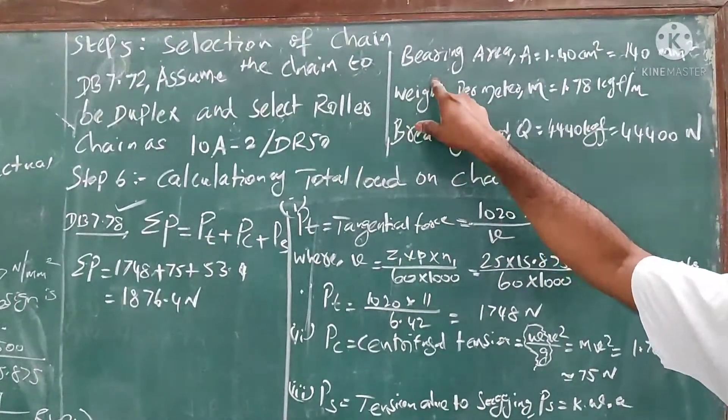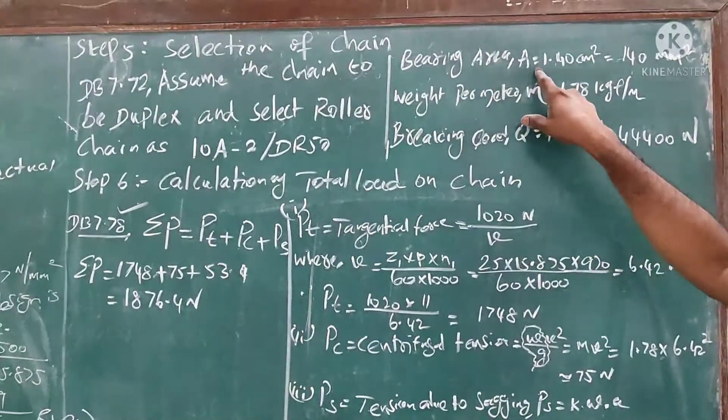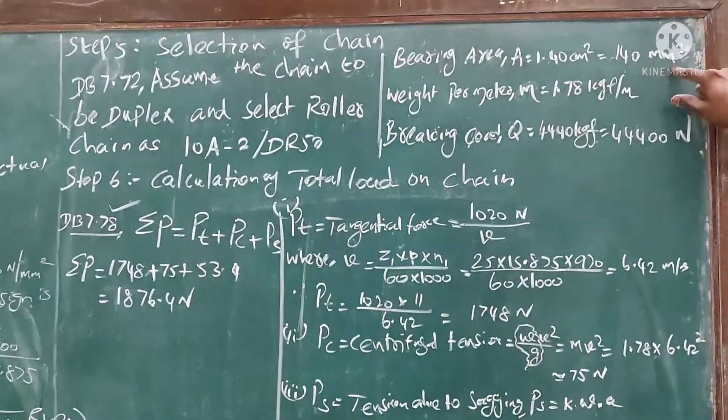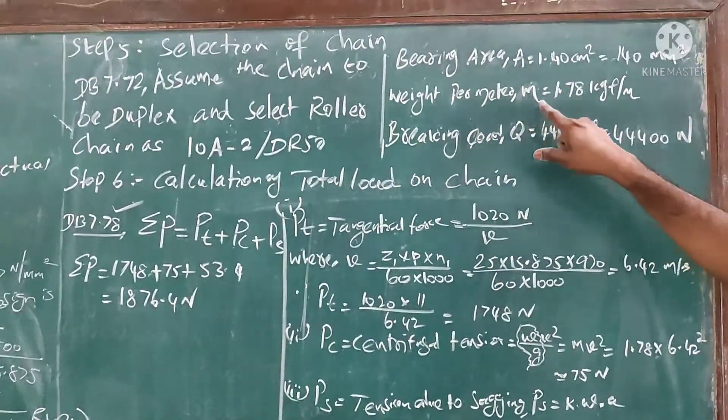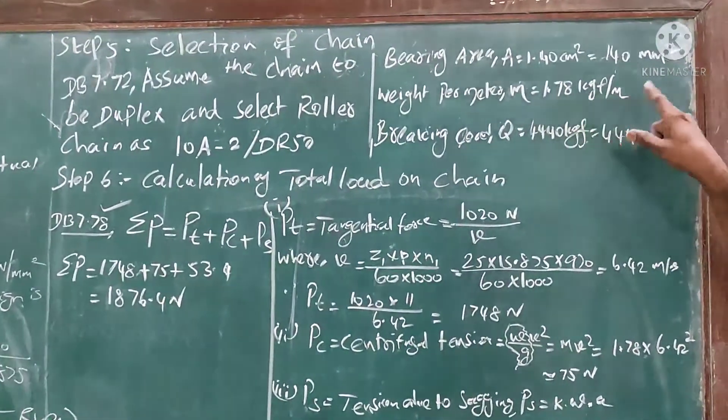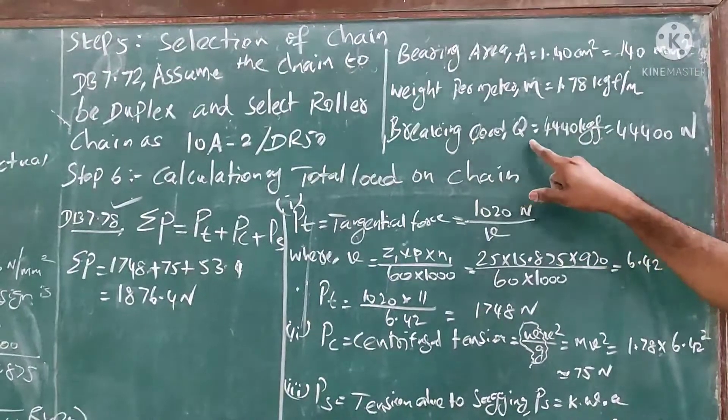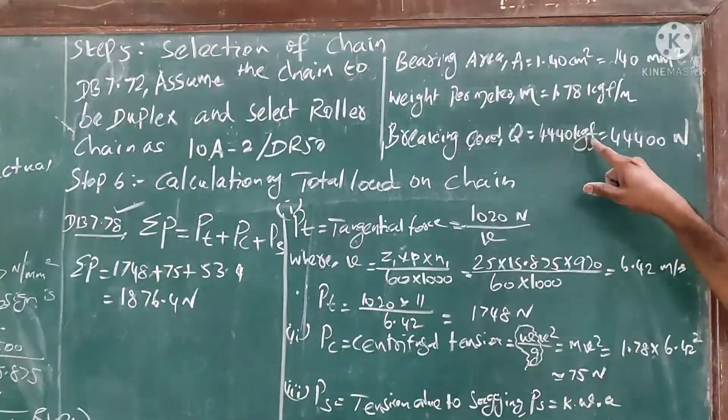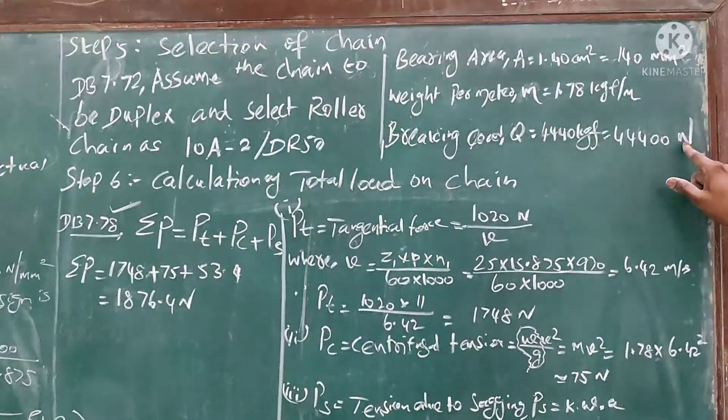you select the parameters as bearing area 1.4 cm² = 140 mm². Weight per meter M = 1.7 kg/m. Breaking load Q = 4440 kgf, convert into Newton, multiply by 10.